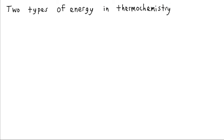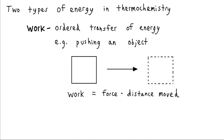For our purposes in thermochemistry, there are really just two different types of energy we're going to be interested in. The first type is work — this is the ordered transfer of energy. For example, if you push an object, there's a definite direction to that; there's some order to the way that you're applying that energy, so this would be an example of work. Work also has a mathematical definition: it's equal to the force that we're applying times the distance over which we apply it.